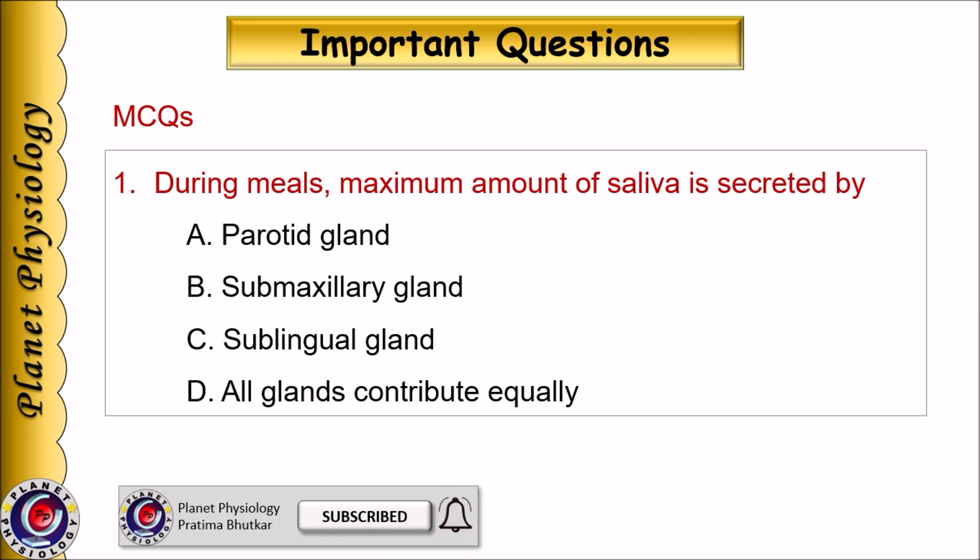Now let us study some important MCQs. During meals, the maximum amount of saliva is secreted by: A. Parotid gland, B. Submaxillary gland, C. Sublingual gland, or D. All glands contribute equally.